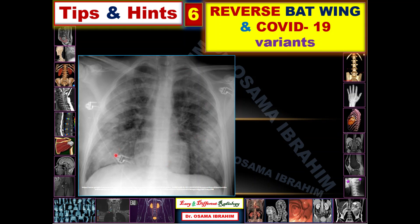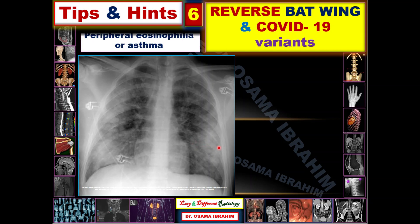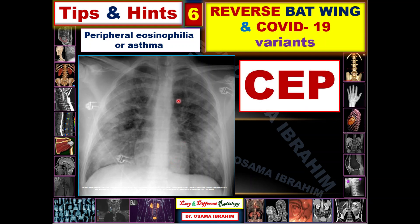This is again the frontal chest radiograph I used to start the presentation. There are peripheral consolidations with sparing of the perihilar regions, which can be described as a reverse batwing sign. In this case, we have a history of peripheral eosinophilia and asthma, so you can easily diagnose it as CEP — chronic eosinophilic pneumonia.